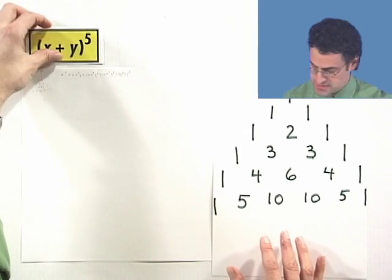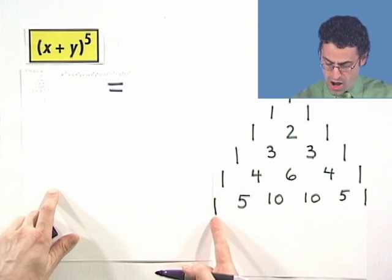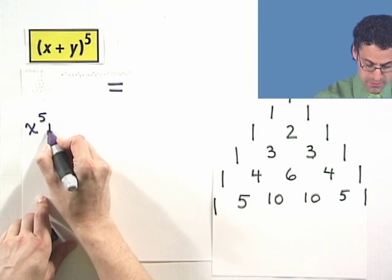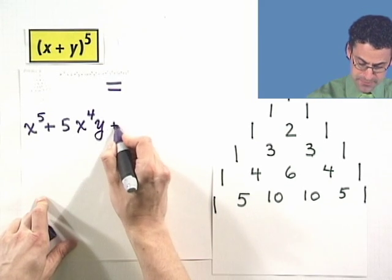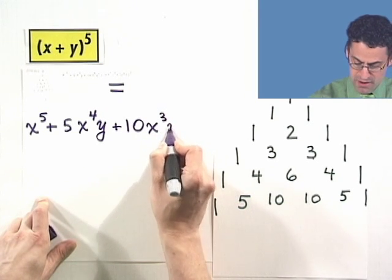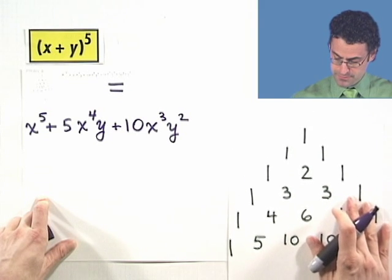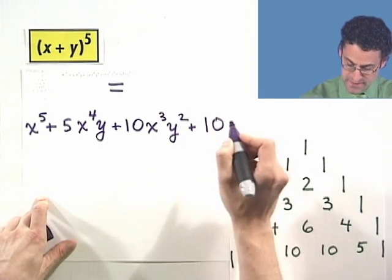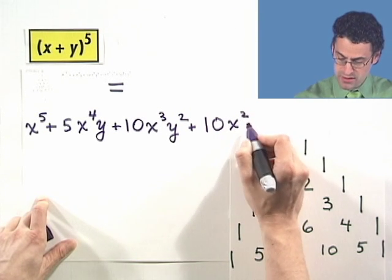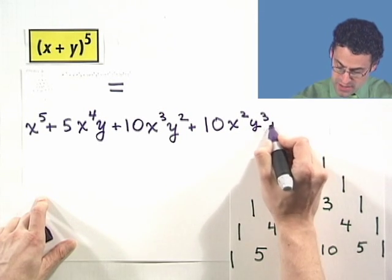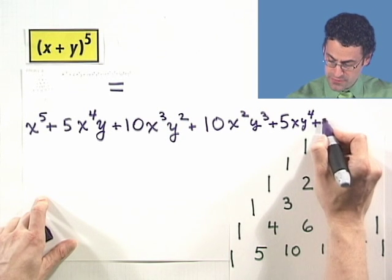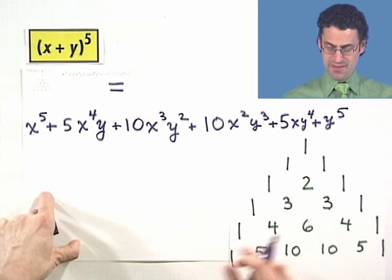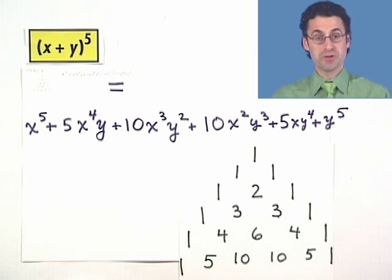So, this equals, here we go, 1 x to the 5th plus 5 x to the 4th and now I've got 1 factor of y plus 10 x cubed, and now I've got 2 factors of y, plus another 10, and now I have x squared times 3 factors of y, plus 5 x y to the 4th, plus, and then finally, y to the 5th. And there you have it. The expansion of this is given just by this. It couldn't be any easier. Let's try another example together, and you can see the binomial theorem working for us.